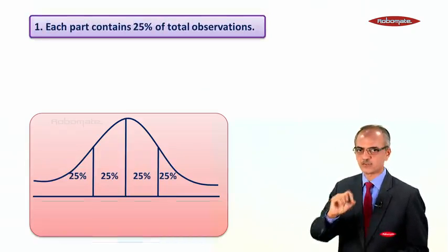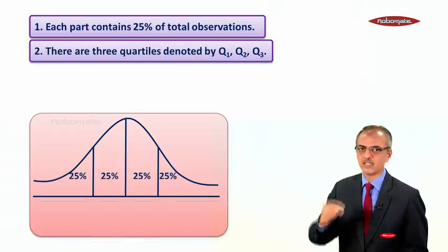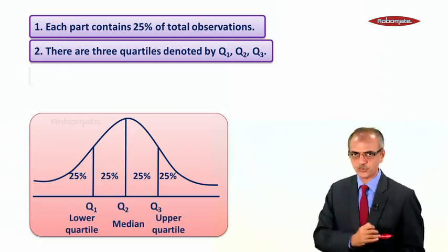The first point: each part contains 25% of the total observations. There are three quartiles: Q1, Q2, and Q3.